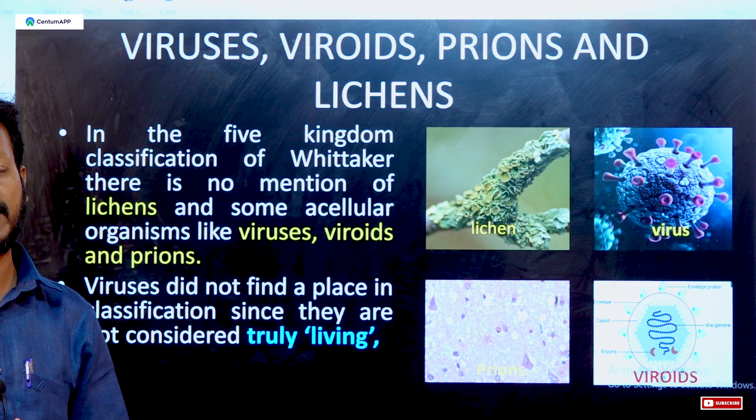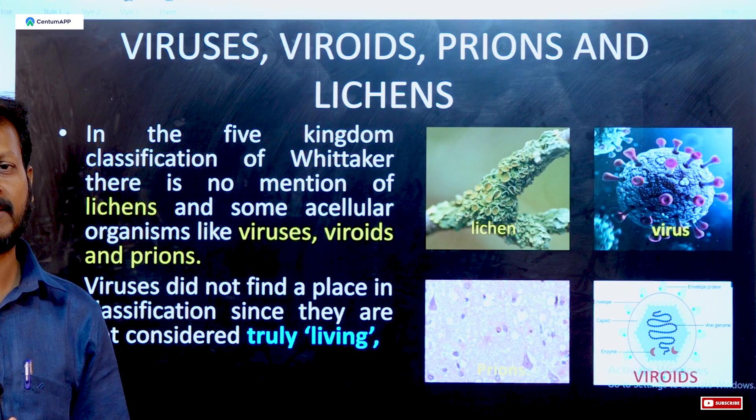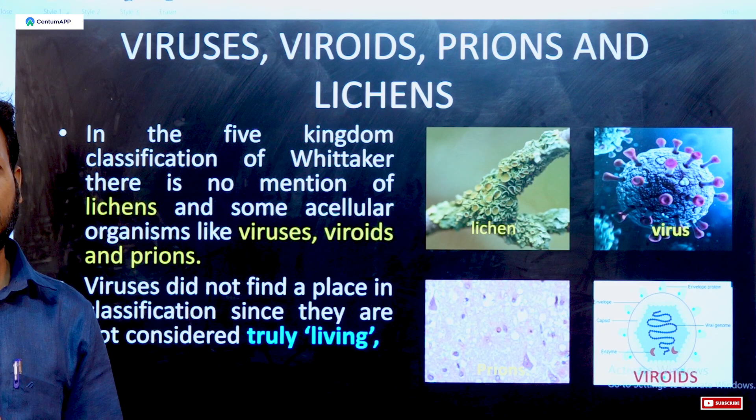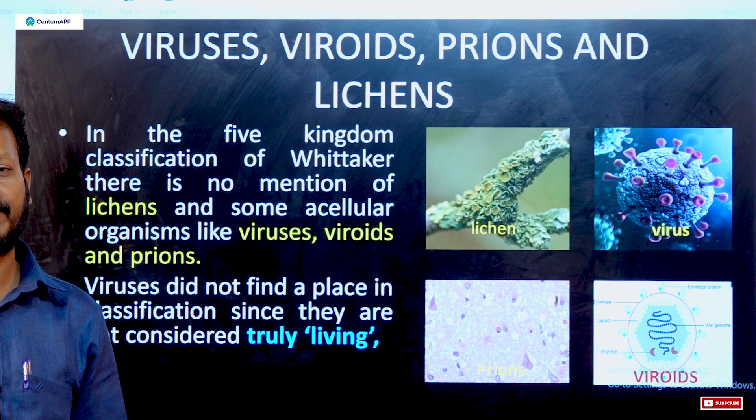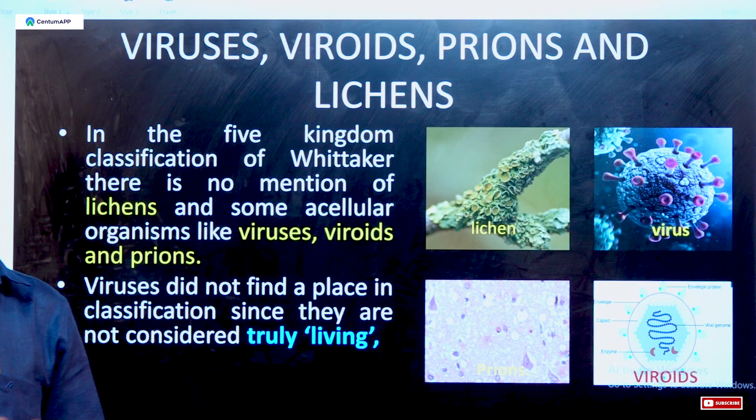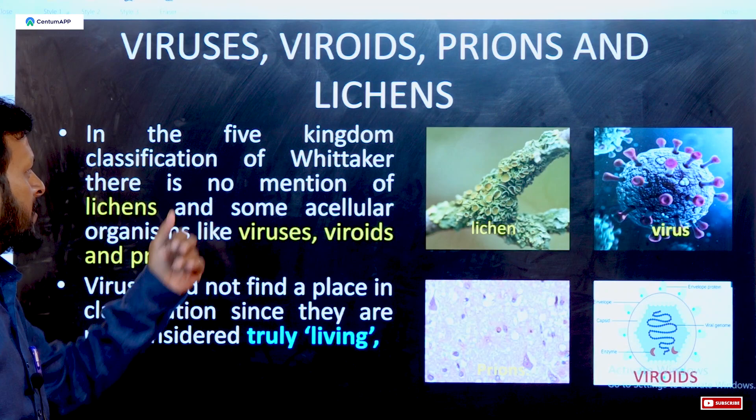Protista mostly includes organisms like amoeba and paramecium. Fungi includes organisms like mushrooms. Plantae includes algae, bryophytes, pteridophytes, gymnosperms, and angiosperms. Animalia includes vertebrates and invertebrates. However, in Whittaker's five-kingdom classification, viruses are not included, because viruses are not truly living things.